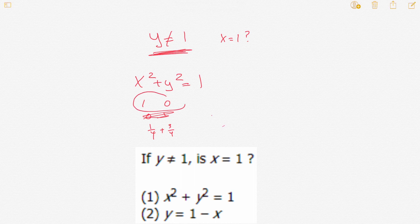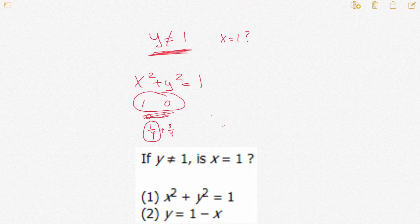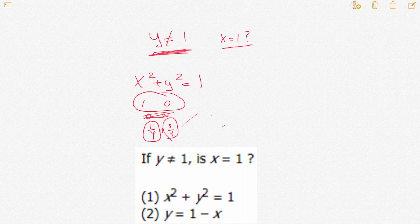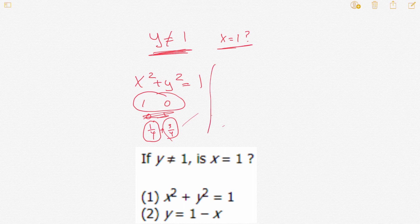So anyway, x could equal 1 and y could equal 0, or x could equal one half, meaning x squared would be one fourth, and y would equal whatever the square root of three-fourths is, right? So by itself, number one is not sufficient to prove that x equals 1. So we could scratch number one as being sufficient.